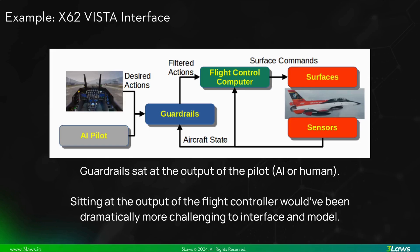This is an example of a safety filtering implementation for the X62 Vista, an F-16 experimental test platform owned by the US Air Force. This layer, called guardrails, was implemented by Three Laws to ensure that human and AI pilots conform to specific state limits, such as geofencing, altitude constraints, and angle of attack limits. Here, the guardrails sat at the output of the pilot and before the flight control system, running at 50 to 200 Hz. It would be dramatically more difficult for the safety layer to sit after the flight control computer due to the added difficulty in interfacing and modeling necessary.